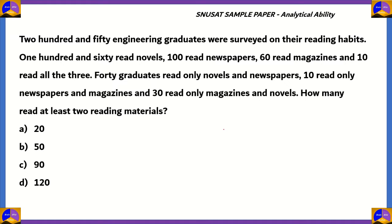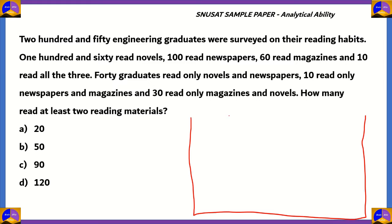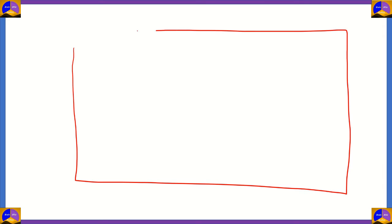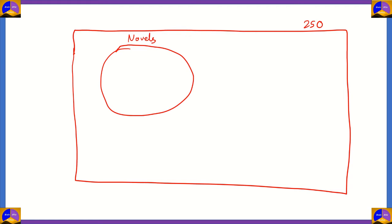This is a question on analytical ability, and a really graphic way to solve it is to use sets. First, we draw out a universal set, which is a rectangle. We know that 250 engineering graduates were totally surveyed. Next, we have one set for novels. Here we have a very big universal set with 250 graduates, and a set for novels that occupies a circle. The total number of people who read novels are 160.